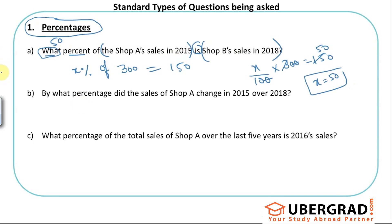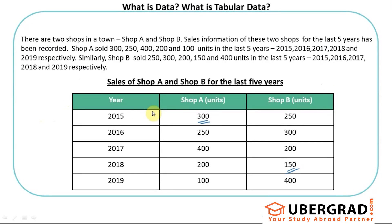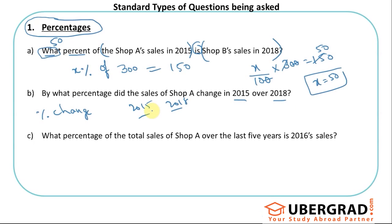Another question type: 'By what percentage did the sales of Shop A change in 2015 over 2018?' This phrasing is asking for a percentage change. Shop A in 2015 is 300 and in 2018 is 200. The formula I always recommend is: percentage change = (final value − initial/base value) / initial value × 100.